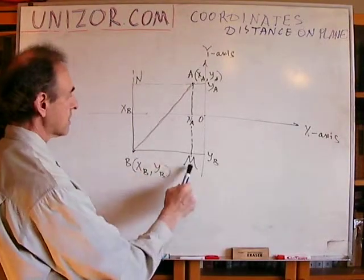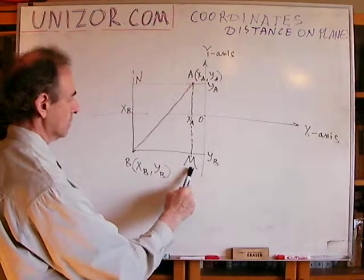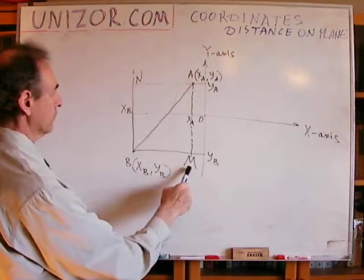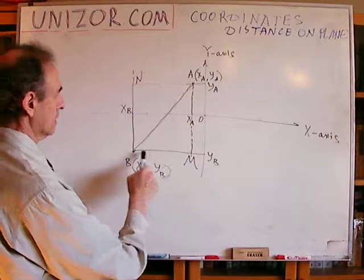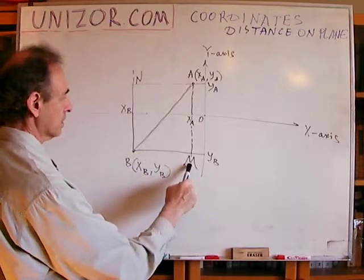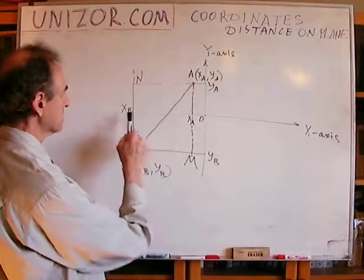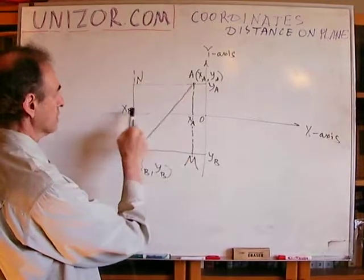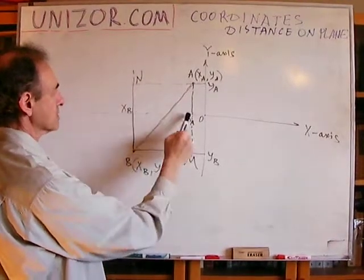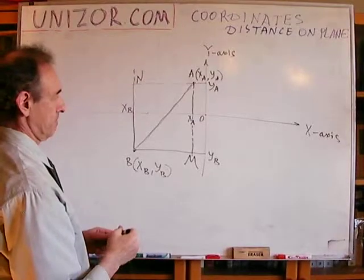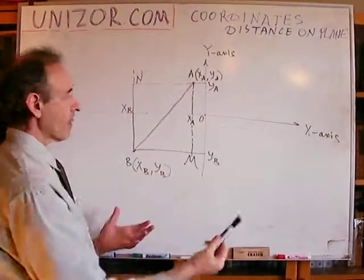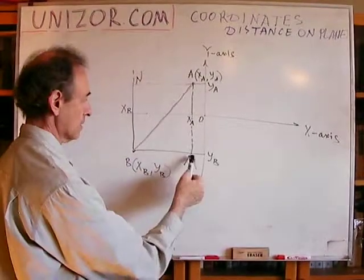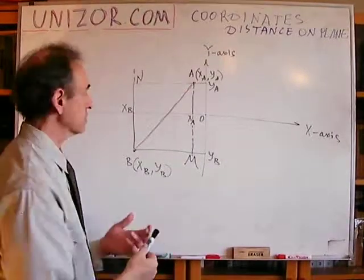Well, the cathetus B, M, obviously, the difference between the distance between B and M is the same as distance between these two points, which have coordinates x_b and x_a.